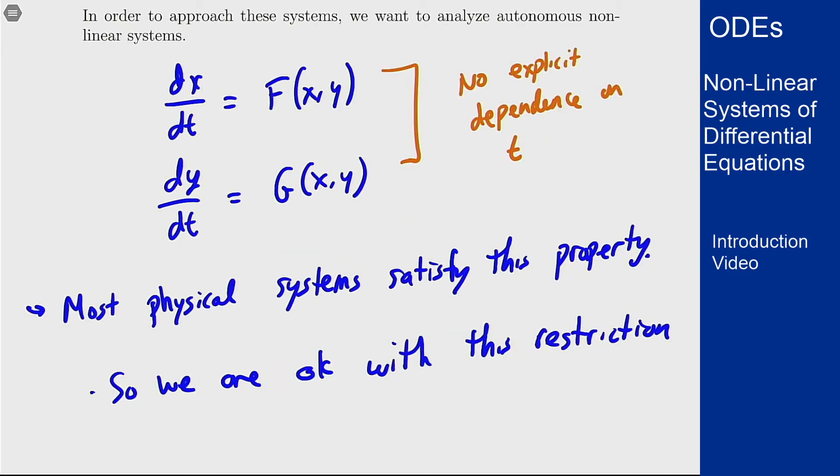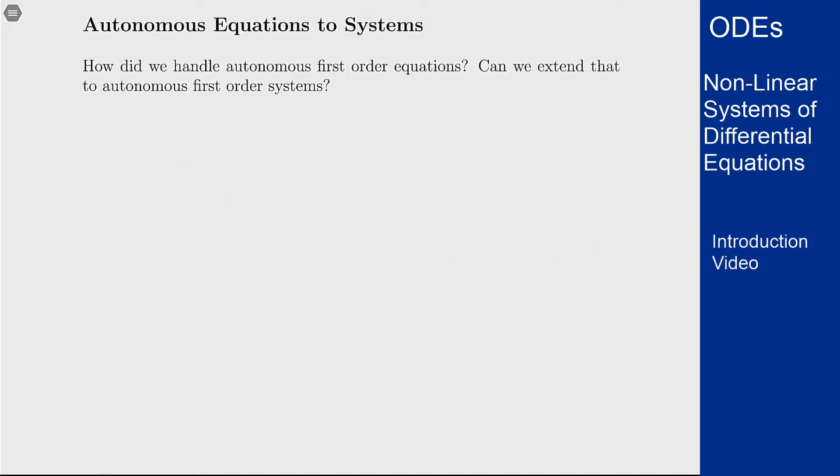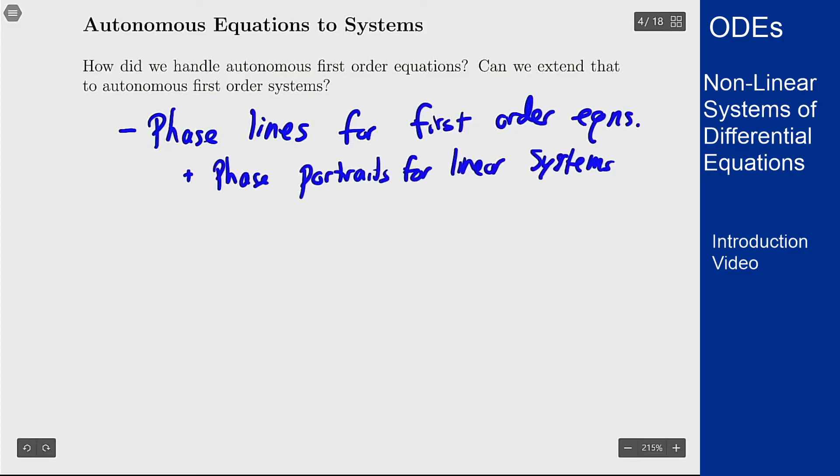We've already seen some autonomous stuff before, namely first order equations that were autonomous. We had an approach there. Let's see if we can extend the same ideas to systems. For first order equations we had phase lines. We've discussed phase portraits for linear systems already.